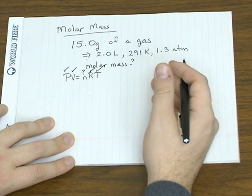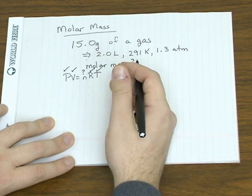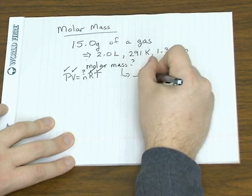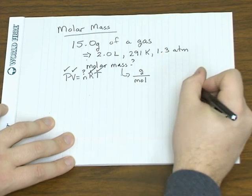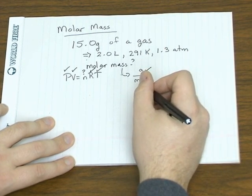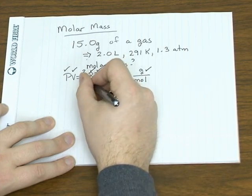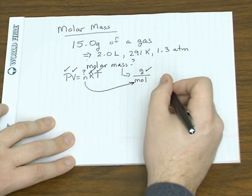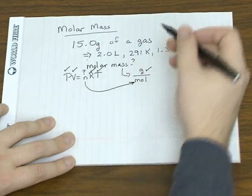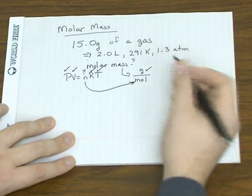So how can we use the number of moles to figure out molar mass? Well remember molar mass is grams per mole. We're given the mass of our gas. So if we can figure out how many moles of gas we have, we can divide the two and get our molar mass.